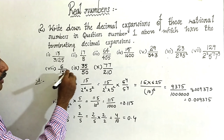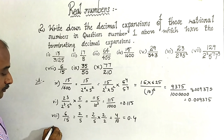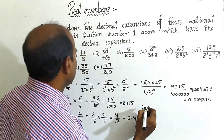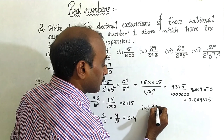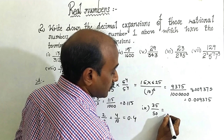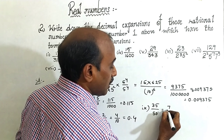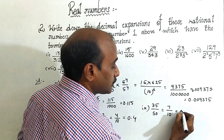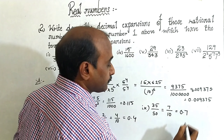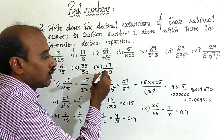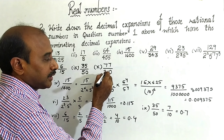Come to ninth one: 35 by 50. You can cancel here — five sevens of 35, five tens of 50 — giving 7 by 10, which is 0.7. Tenth one we already know is a non-terminating decimal.